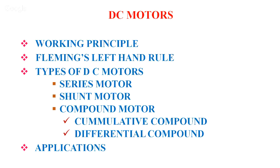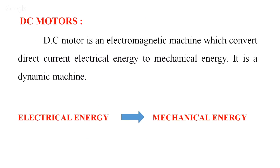We will also study the applications of the motors. Let us define what is a DC motor. A DC motor is an electromagnetic machine which converts direct current electrical energy to mechanical energy. It is called a dynamic machine because it has rotating parts.